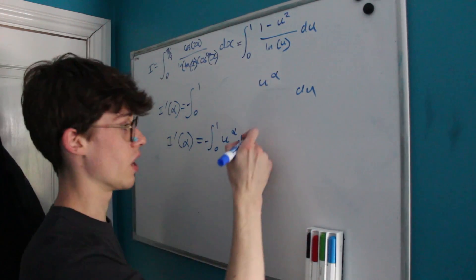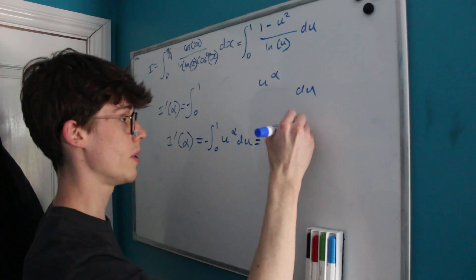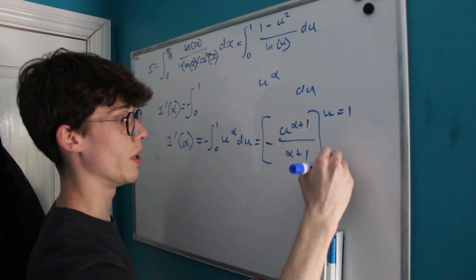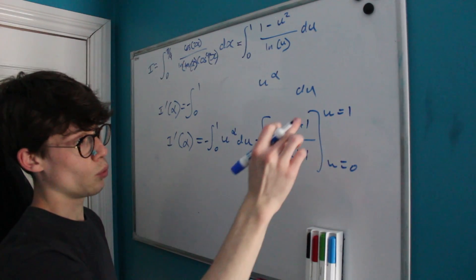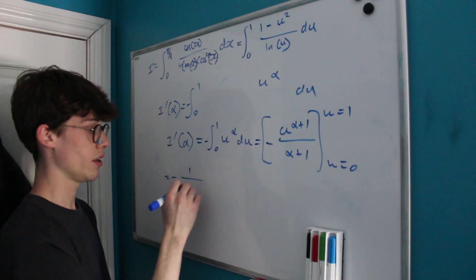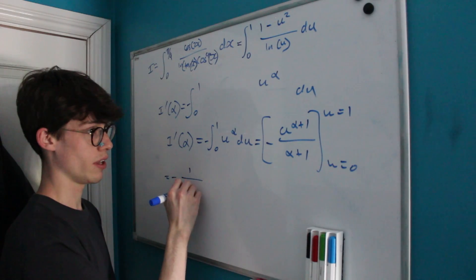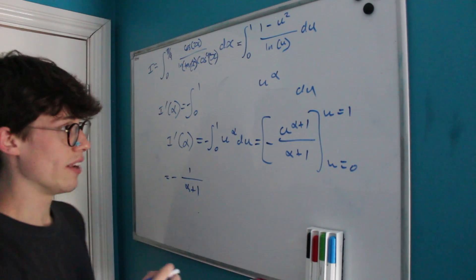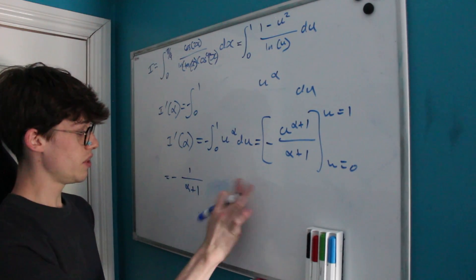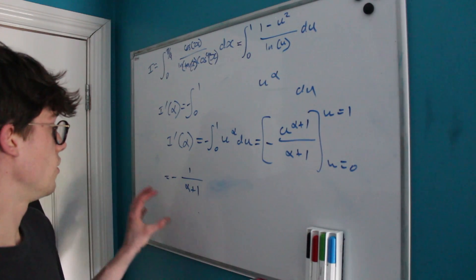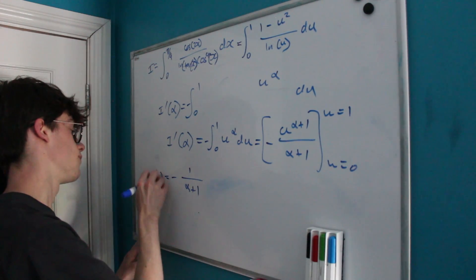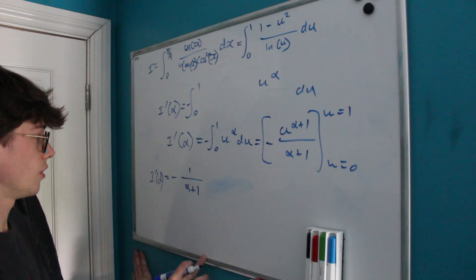This is just the power rule — we add 1 to the power and divide by the new power, evaluated between 0 and 1. When u = 1 we get 1/(α+1), and when u = 0 we get 0. So I'(α) equals negative 1/(α+1).